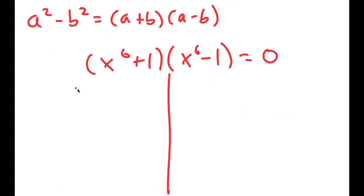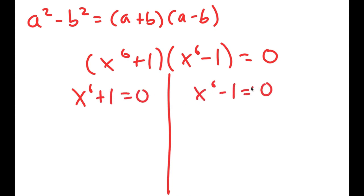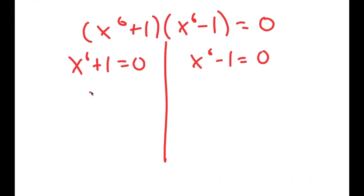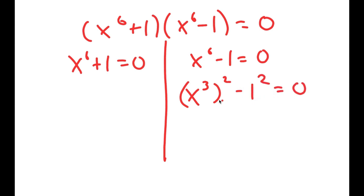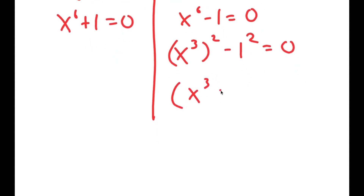This gives me two equations: x to the power of 6 plus 1 equals 0, and x to the power of 6 minus 1 equals 0. Now I'm going to do the same thing again. I'll rewrite x to the power of 6 minus 1 equals 0 as x to the power of 3, squared, minus 1 squared equals 0. Using the difference of squares property again, I get x to the power of 3 plus 1 times x to the power of 3 minus 1 is equal to 0.